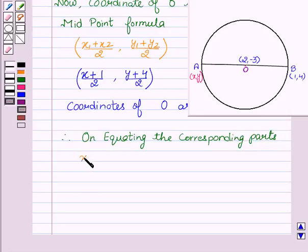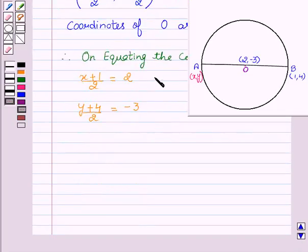we get (X + 1)/2 equal to 2 and (Y + 4)/2 equal to -3. So let this be our first equation and this is our second equation.